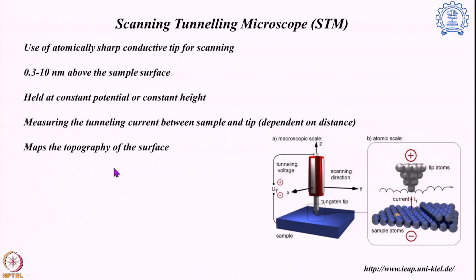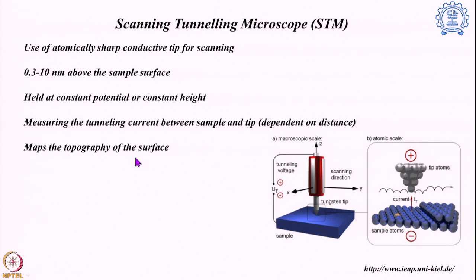The scanning tunneling microscope, which measures the tunneling current, is a very unique tool to find out the topography of a surface. Here I am showing an STM image of graphene — you can very clearly see what is present. When the STM probe passes over a bonding system it detects something totally different than over an electron-vacant site, and those differences are detected by the probe. That is the scanning tunneling microscopy or STM.